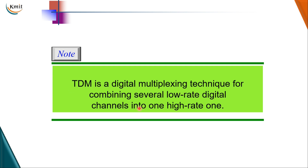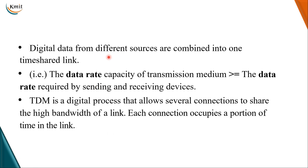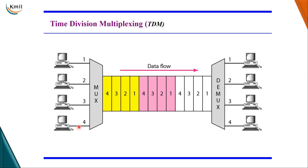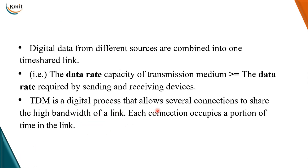The third type is TDM — time division multiplexing — which is a digital multiplexing technique where we combine several low-rate digital channels into one high-rate one. Digital data from different sources are combined into one time-shared link. The requirement is that the data rate capacity of the transmission medium should be greater than or equal to the data rate required by the sending and receiving devices. TDM is a digital process that allows several connections to share the high bandwidth of a link.